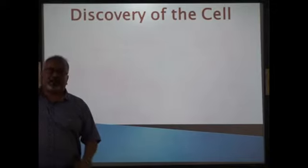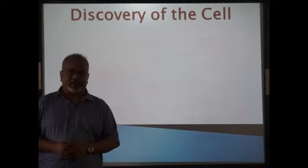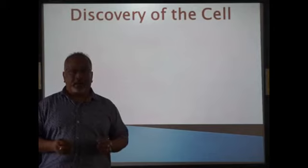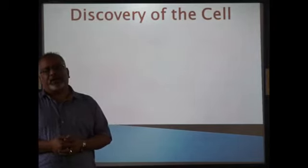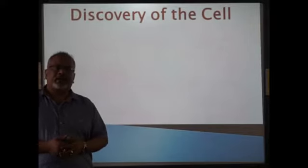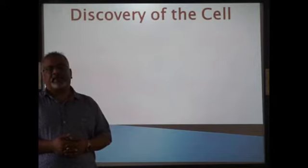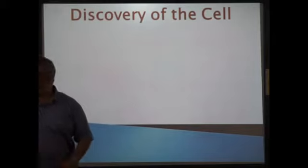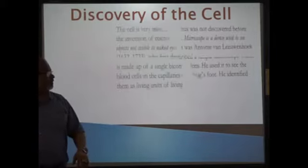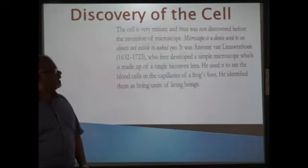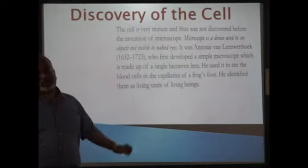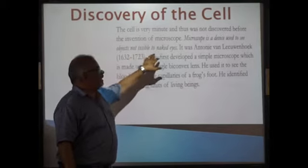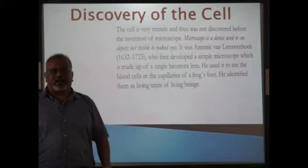Now comes the discovery of the cell. In olden days nobody knew about cells because cells are very minute — microscopic — meaning they can only be seen under a microscope. In those days there were no microscopes, so though the cell existed, nobody knew about it. A microscope is a device used to see objects not visible to the naked eye — that is, without any lens or aid.